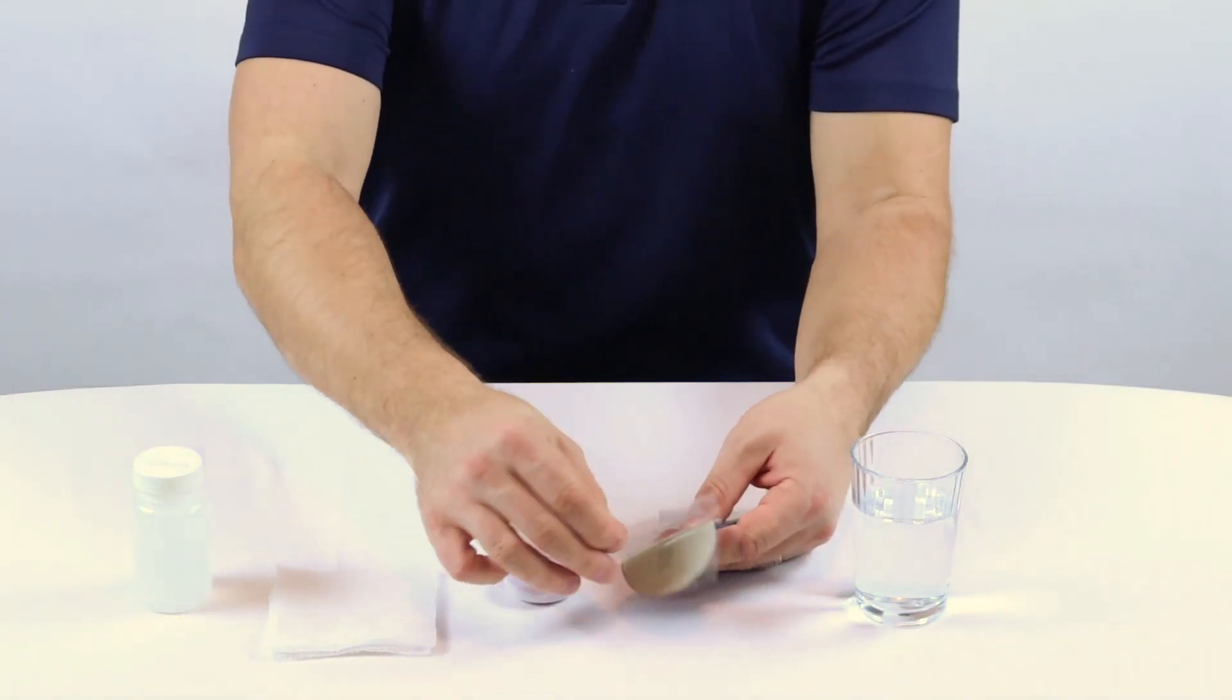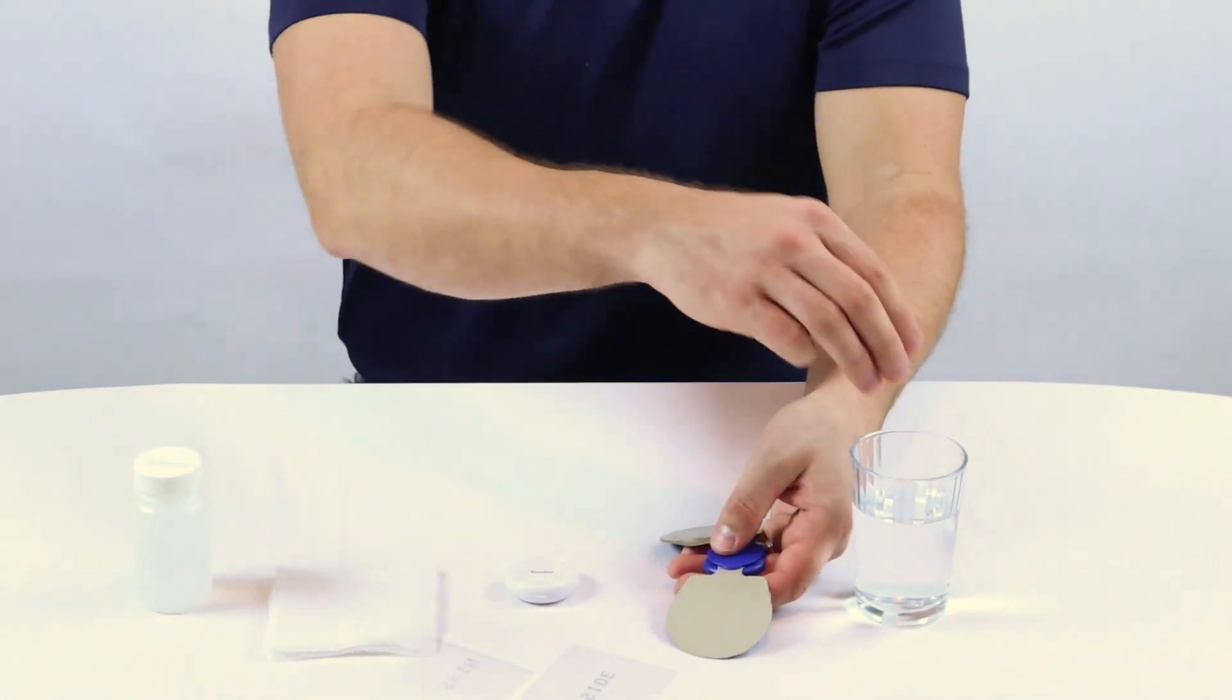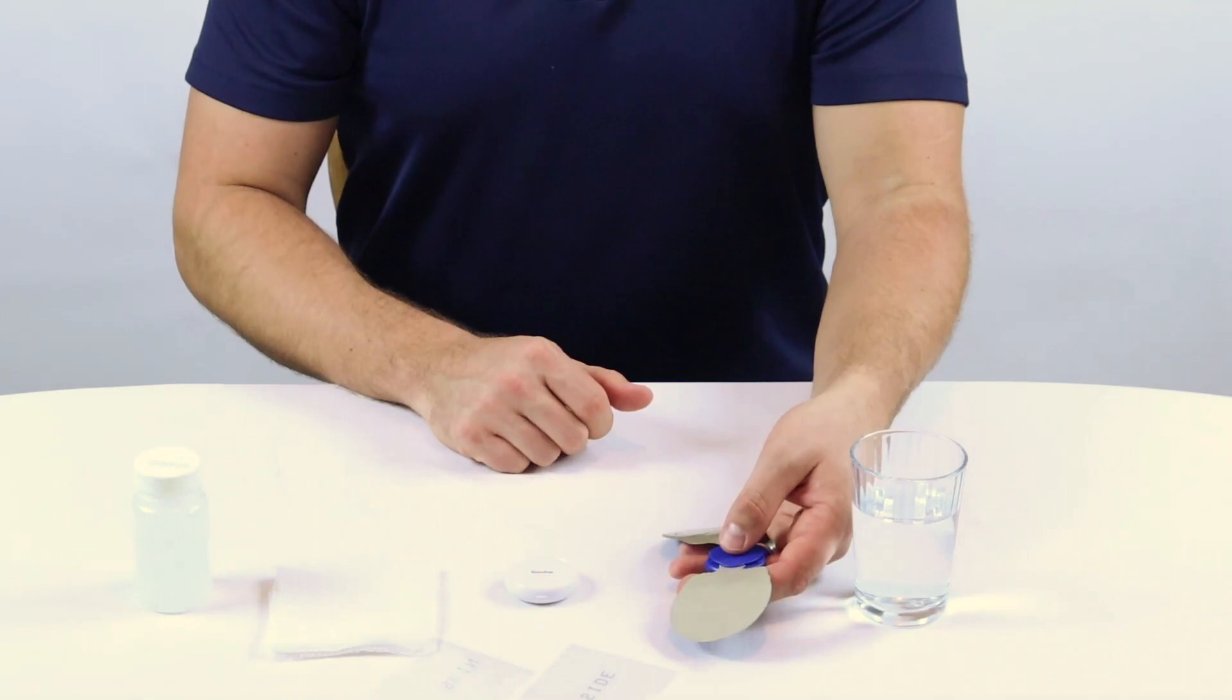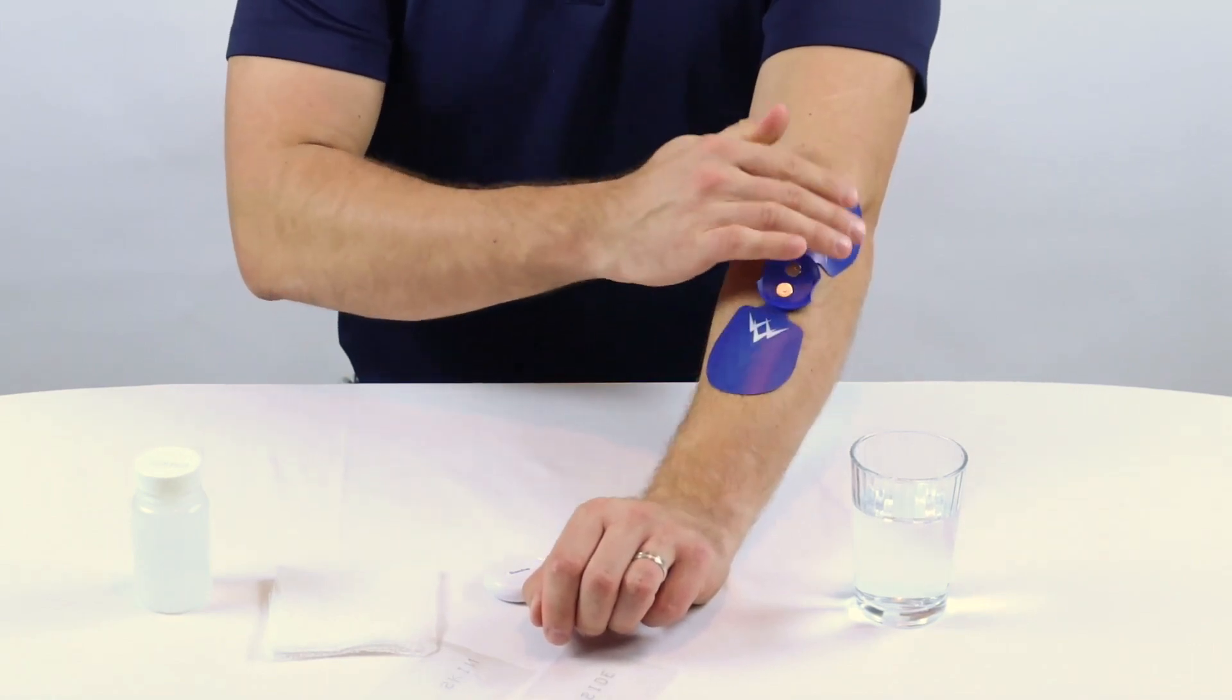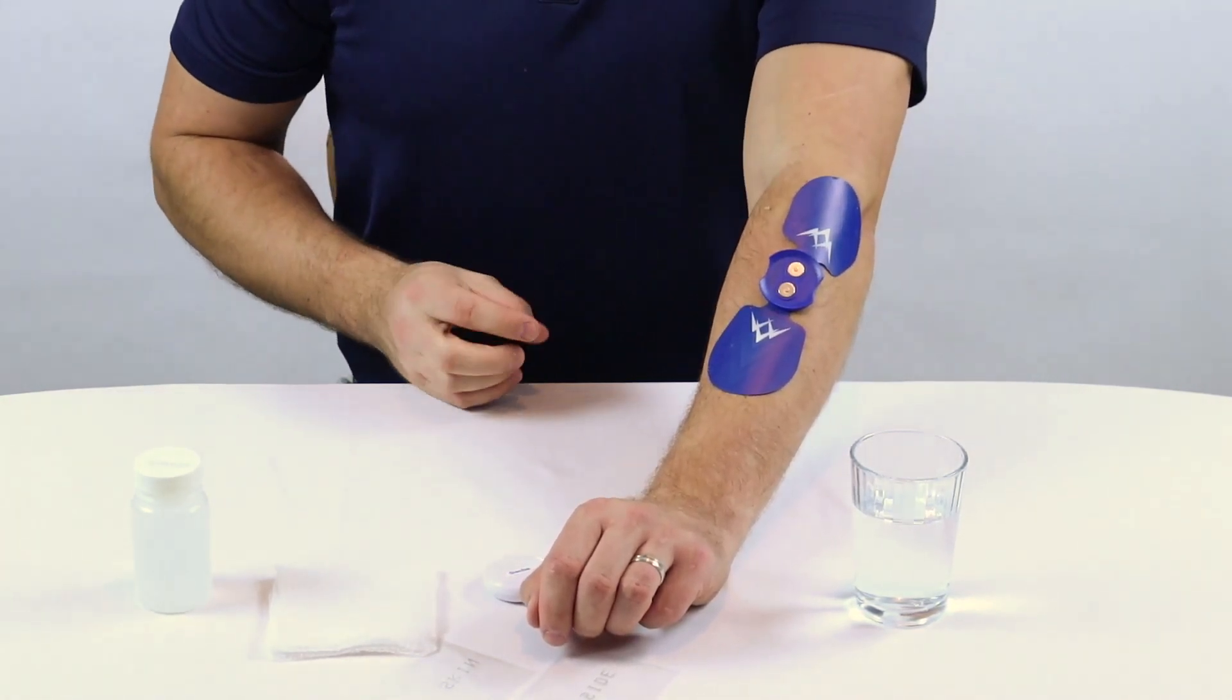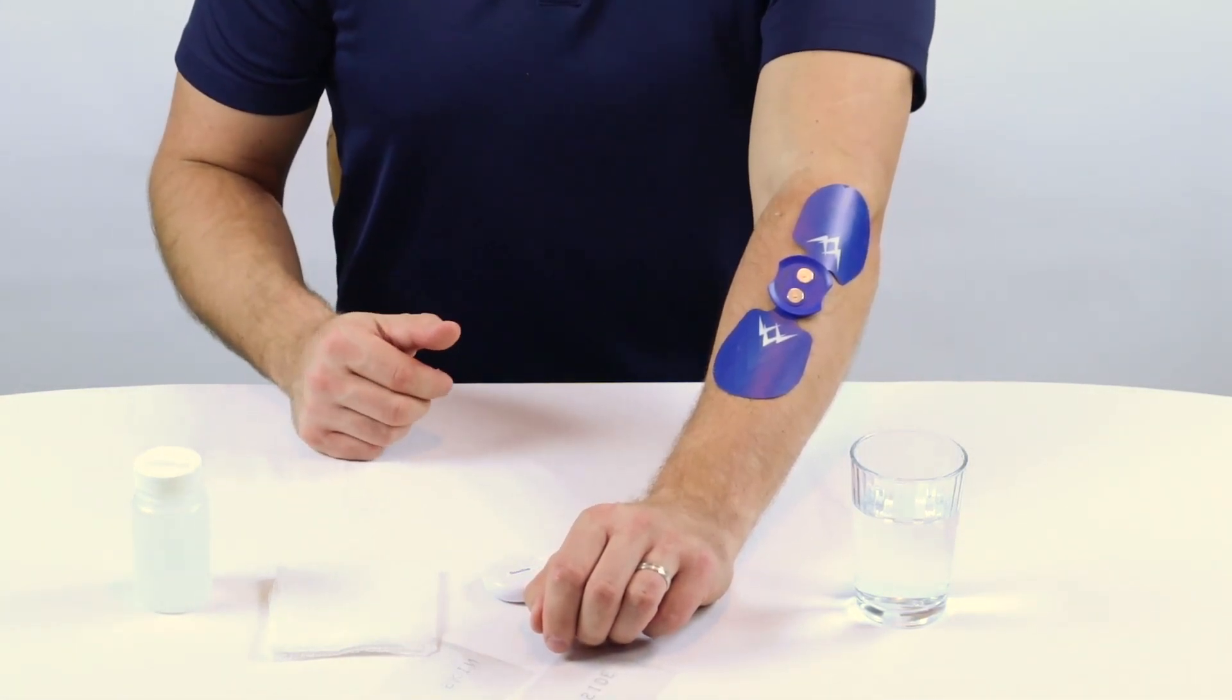Also, when applying your gel pads, if you find that they are not sticky, you can apply a little bit of water before you apply them. Then finally, apply them to your skin for the exercise, but make sure that you press firmly to adhere to the skin. If you find that they aren't sticking in certain areas, you may want to replace your gel pads.